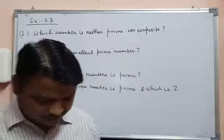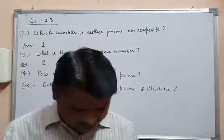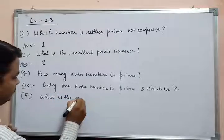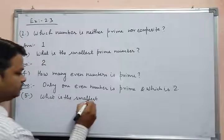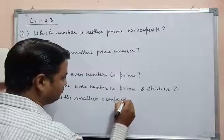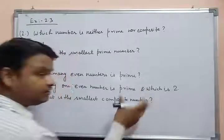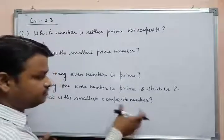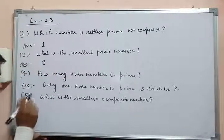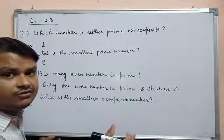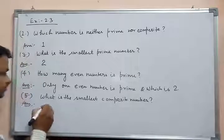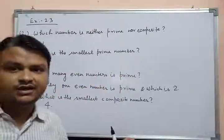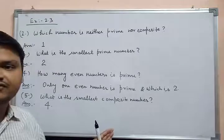Now moving to the next question: what is the smallest composite number? The answer is very easy because I have already given it in the notes after the definition. Four is the smallest composite number, and the answer is four. Students, take a screenshot or pause the video to note it down.